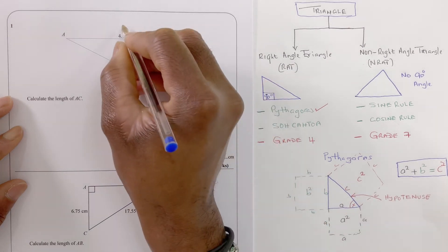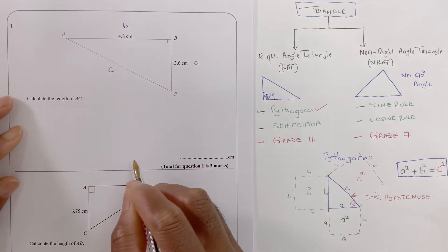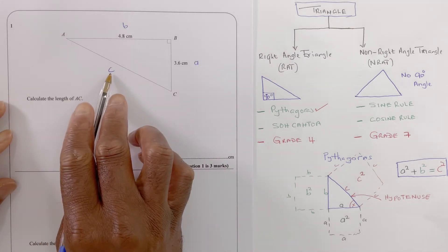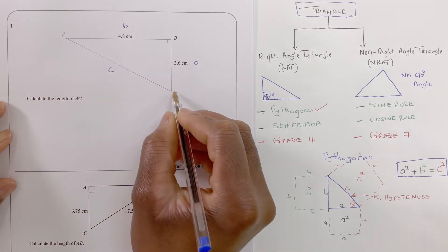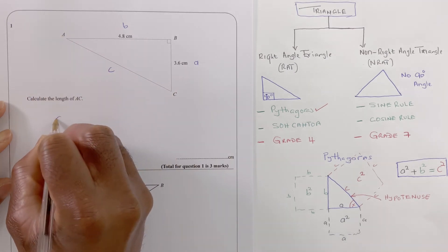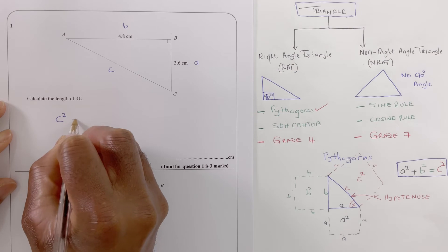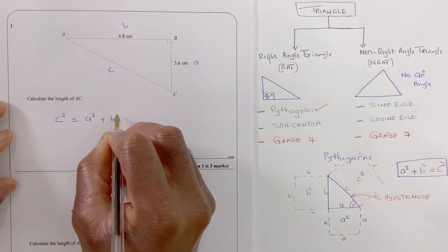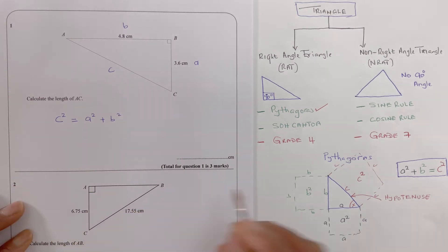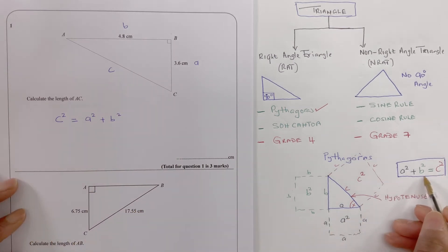Because we're finding c, we can say c squared is equal to a squared plus b squared, so we're applying that.